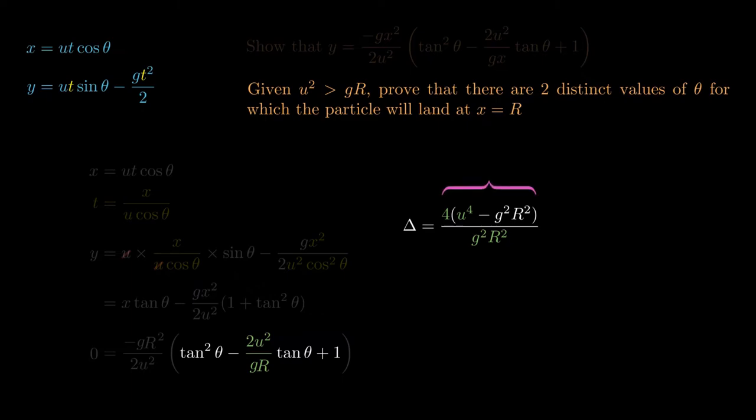This upstairs guy must be positive, because we're given u square is bigger than gr. So when we square them, that order is preserved, because all three of those constants are themselves positive. So we're not worried about the extra square flipping the order or anything.